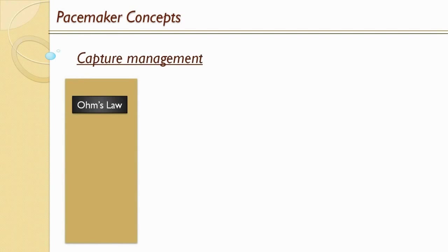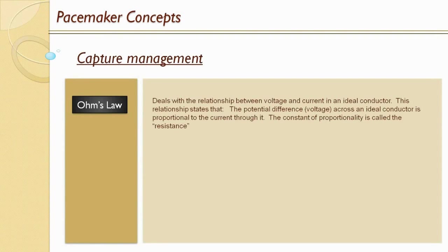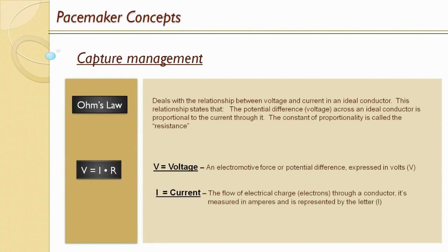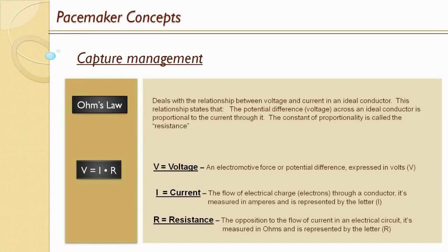Ohm's Law deals with the relationship between voltage and current in an ideal conductor. This relationship states that the potential difference, voltage, across an ideal conductor is proportional to the current through it. The constant of proportionality is called resistance. The equation for Ohm's Law is voltage equals current times resistance. Voltage is the electromotive force or potential difference expressed in volts. Current is the flow of electrical charge or electrons through a conductor, measured in amperes and represented by the letter I. Resistance is the opposition to flow of current in an electrical circuit, measured in ohms and represented by the letter R.